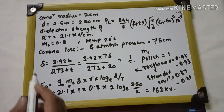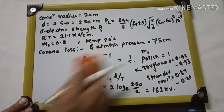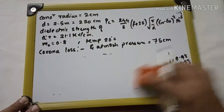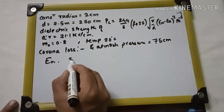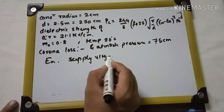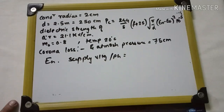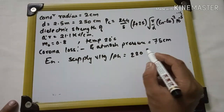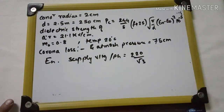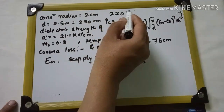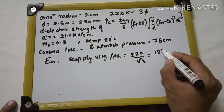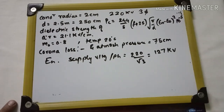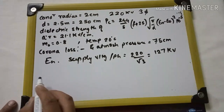So far we have found δ = 1 and E0 = 163 kV. Now we find the supply voltage per phase: En = 220 / √3 = 127 kV.